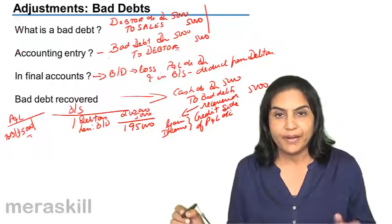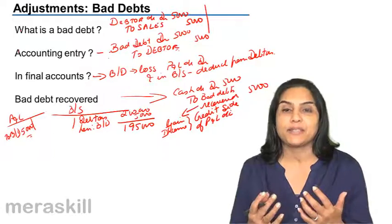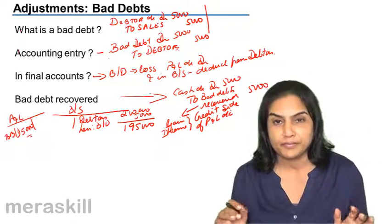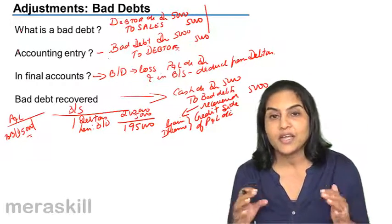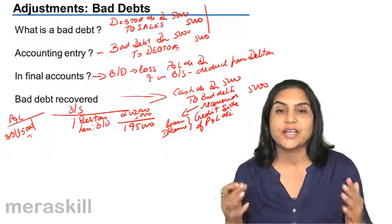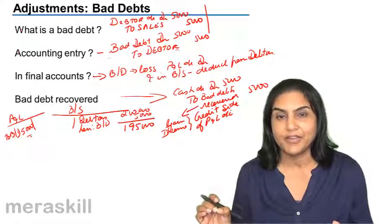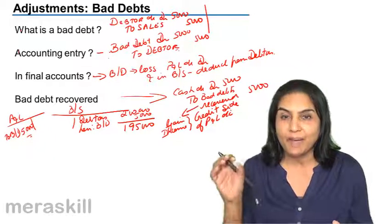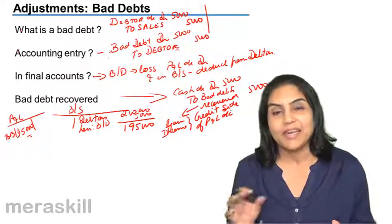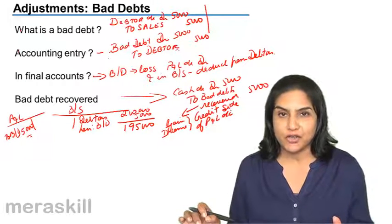So, bad debt account debit to debtors. In case bad debts previously written off are recovered, the entry is cash account debit to bad debts recovered account. Bad debts recovered account, being an income item, is taken to the credit side of the profit and loss account.